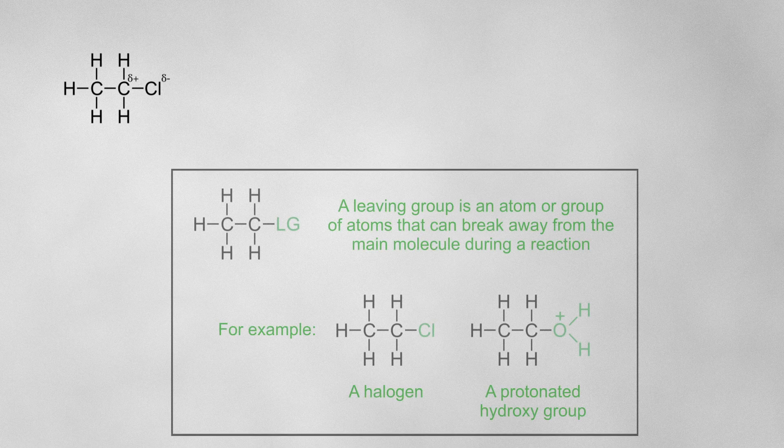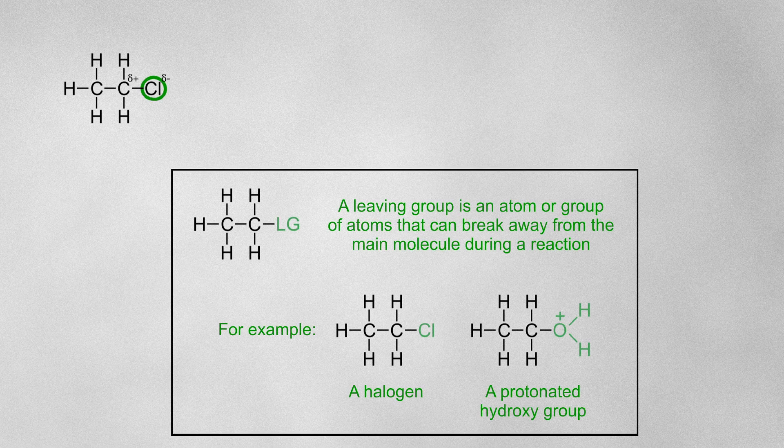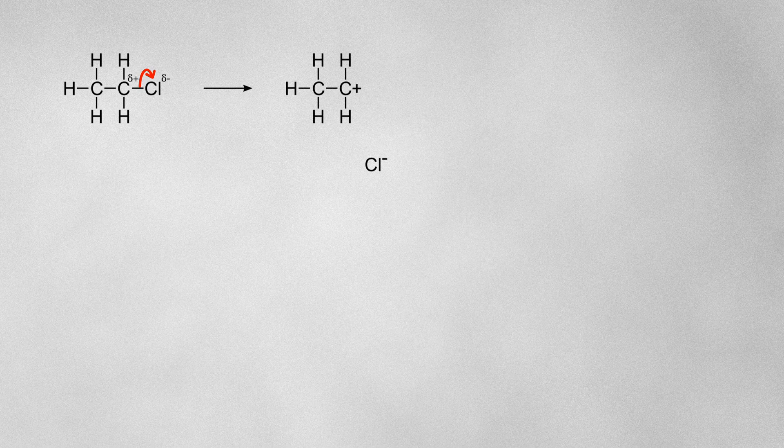In an E1 reaction, there is only one reactant involved in the rate determining step, the haloalkane. The bond between the carbon and the leaving group, in this case the halogen, spontaneously breaks, causing a halide ion to leave the molecule.